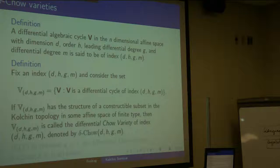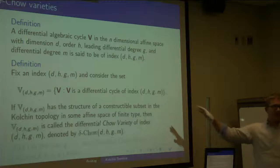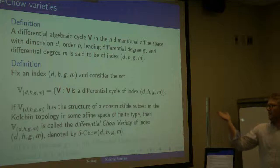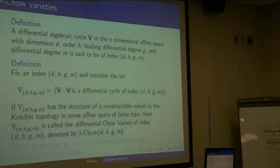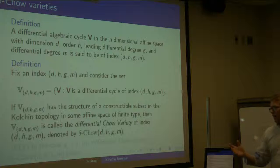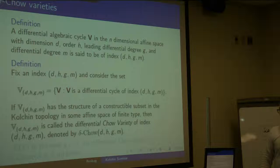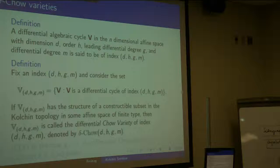Consider the set of positive cycles of that index. If this set has the structure of a constructible subset in the Kolchin topology of some affine space of finite type, then I'll call that set the differential Chow variety — or say the differential Chow variety exists. This is what Gao, Li, and Yuan mean by a differential Chow variety existing.